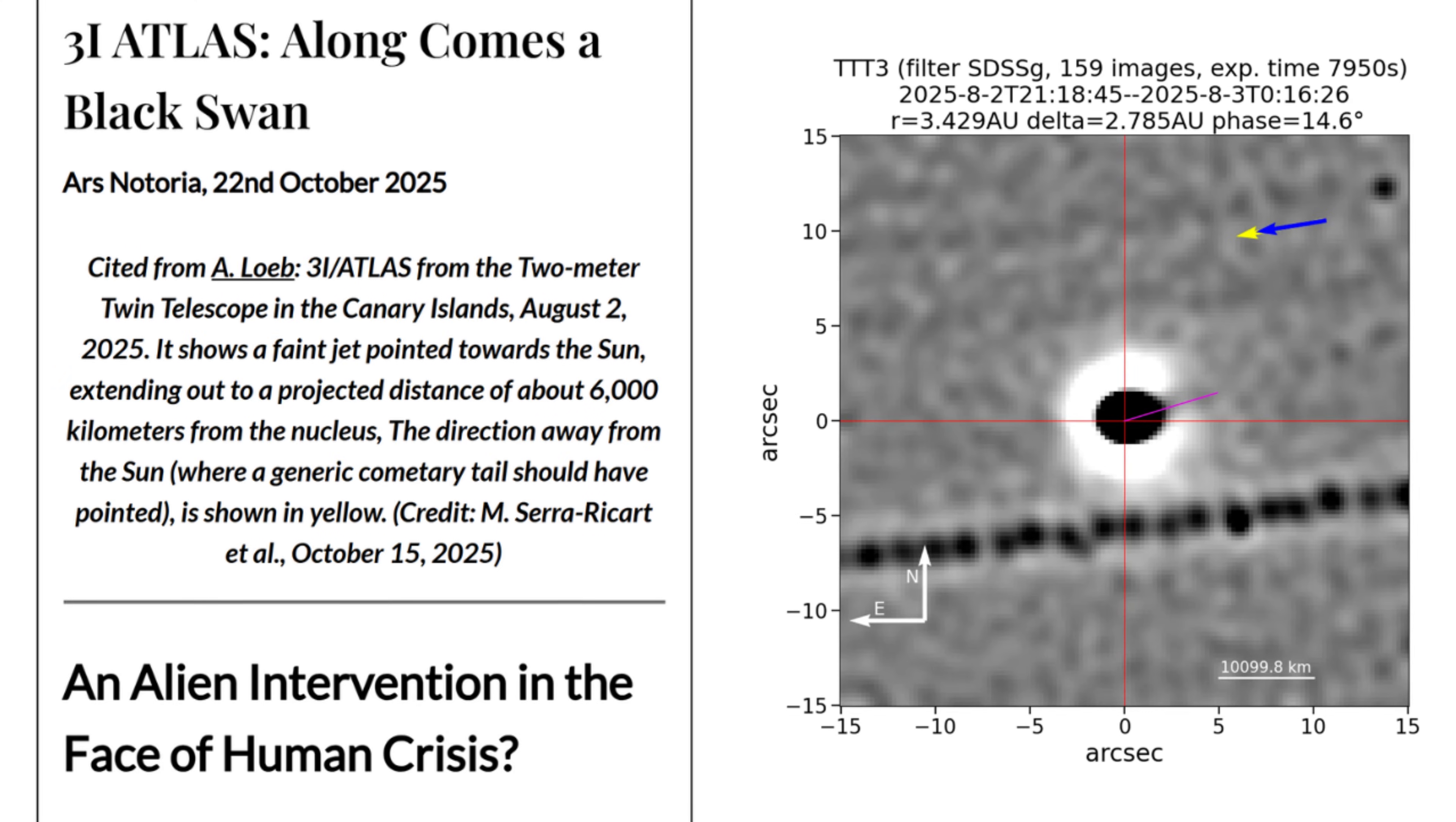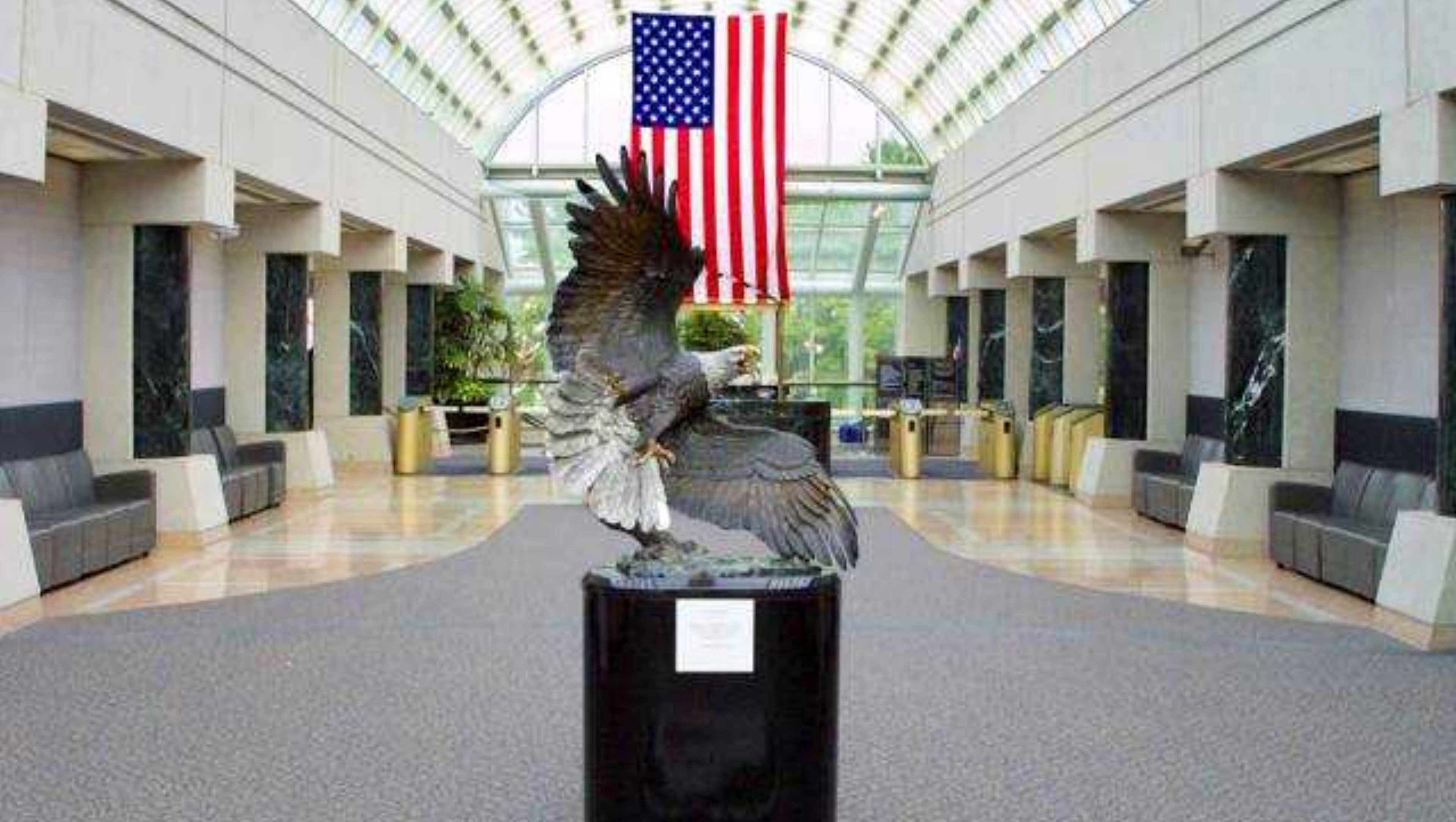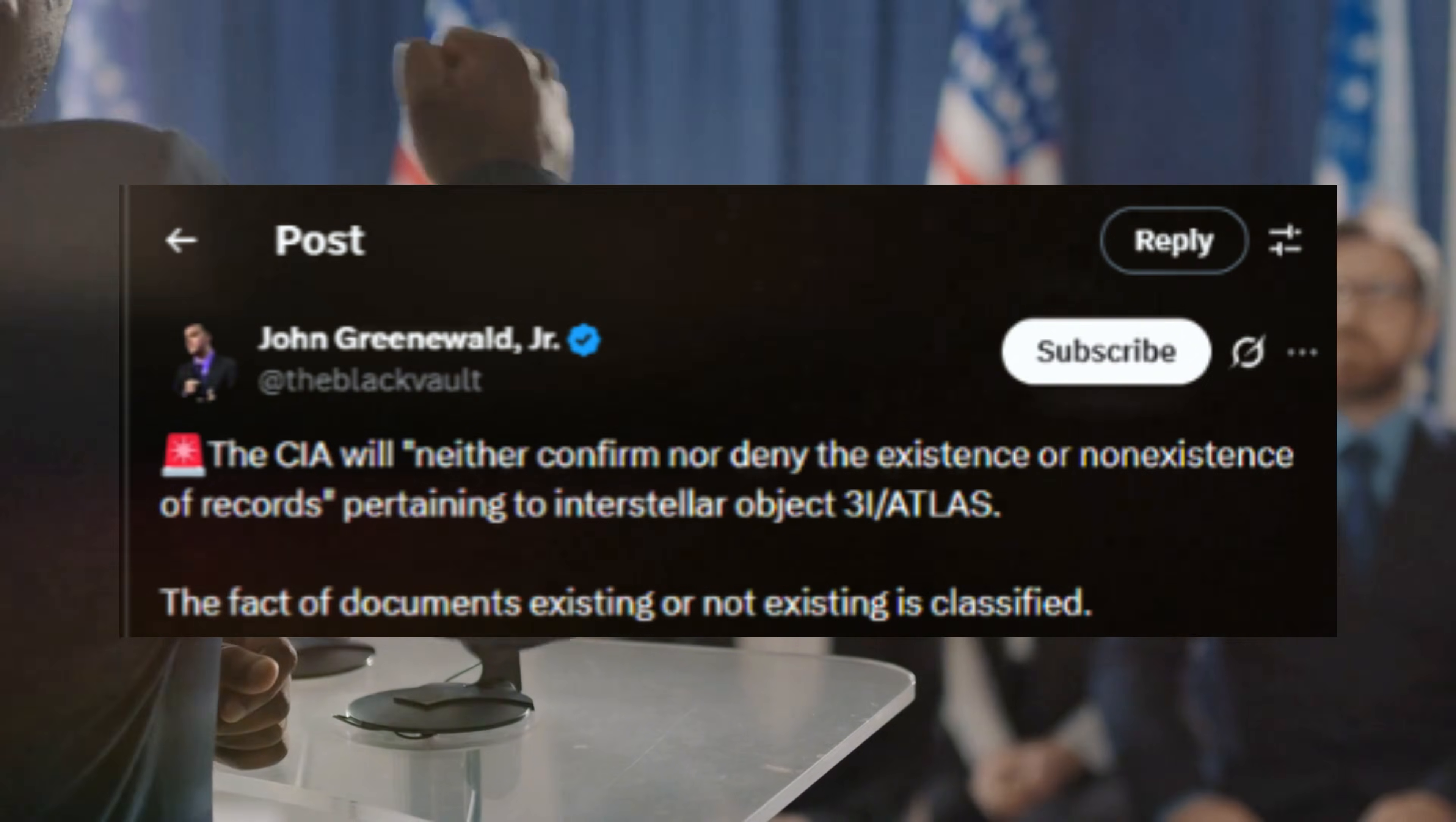The simplest interpretation of the CIA's response is that some government officials may have viewed 3I Atlas as a black swan event, a highly unlikely yet potentially catastrophic event that must be taken seriously. By acknowledging such a possibility and keeping it hidden, the CIA may have been protecting the public from unnecessary panic. The neither confirm nor deny response ensures that investigations into such rare and dangerous scenarios are kept from the public eye, preventing societal instability.